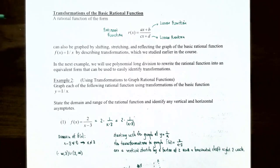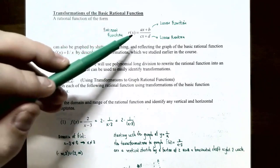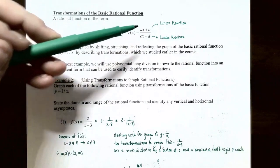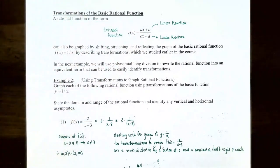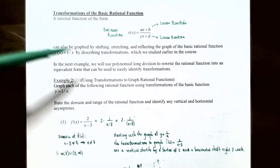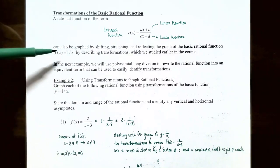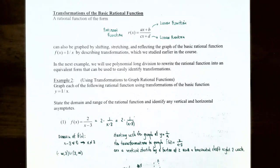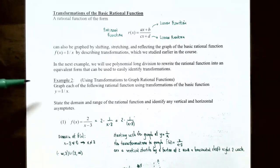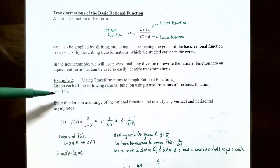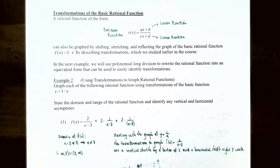A rational function of the form r of x equals ax plus b over cx plus d — a linear function divided by a linear function — can be graphed by shifting, stretching, or reflecting the basic function y equals 1 divided by x using transformations. In the next example we'll use polynomial long division to rewrite the rational function into a form that identifies the quotient and remainder polynomials, making the transformations easier to identify.